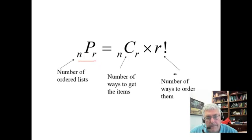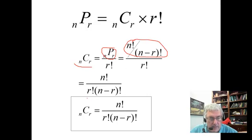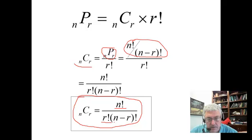So NPR, the number of unordered lists is first the number of ways that we can get our R items from N, and then the number of different ways that we can order those items. So it's NCR times R factorial. And we can solve this by saying NCR is NPR divided by R factorial. You replace this with its formula, you do the math on it, and you get that NCR is equal to N factorial over R factorial times N minus R quantity factorial.